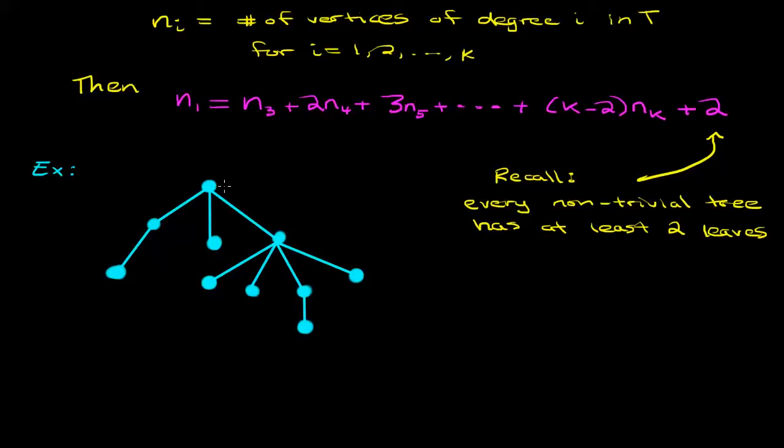Now let's start labeling the degrees of all of the vertices. That's pretty easy to do. Now what we want to do is figure out what are these values of n_i.